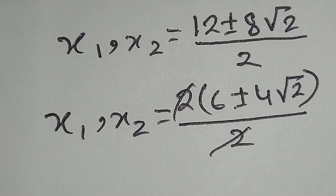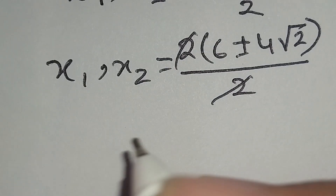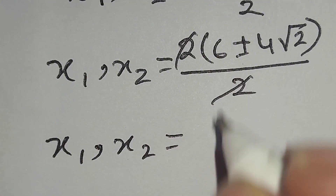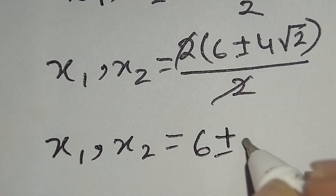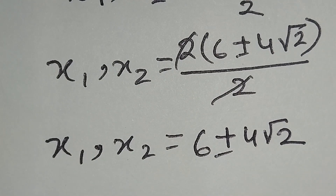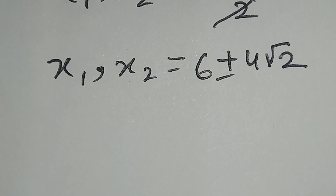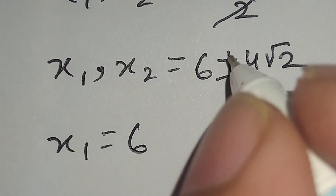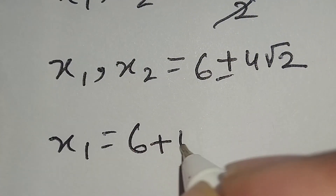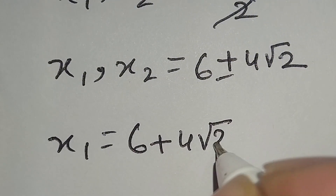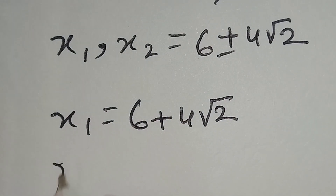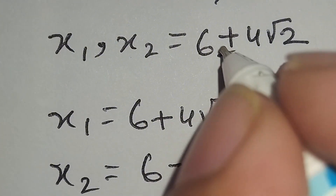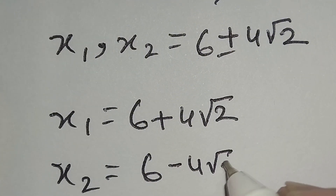Now we take 2 common from numerator and denominator. So x1 and x2 is equal to 6 plus or minus 4 times square root of 2. Therefore x1 is equal to 6 plus 4 square root of 2, taking the positive sign, and x2 is equal to 6 minus 4 square root of 2, taking the negative sign. This is our answer.